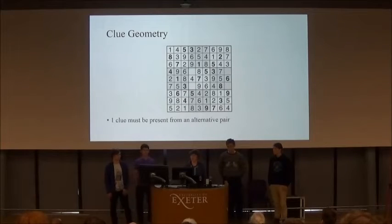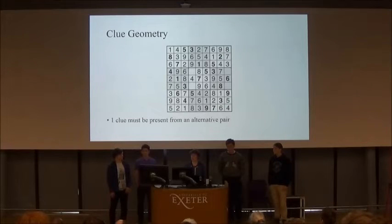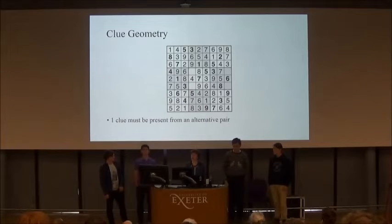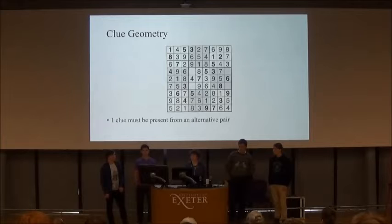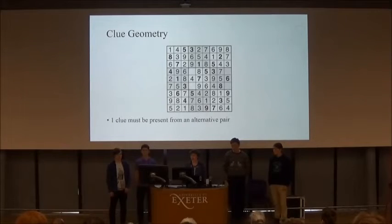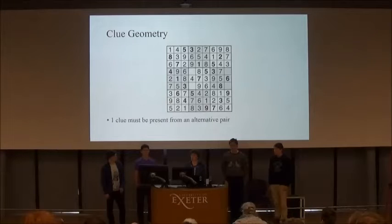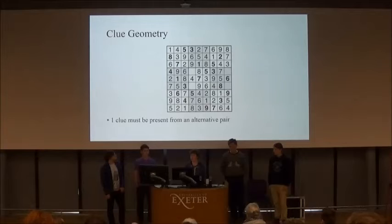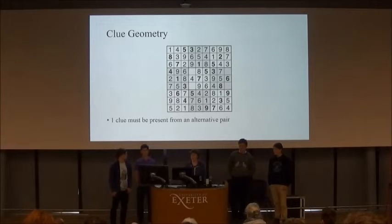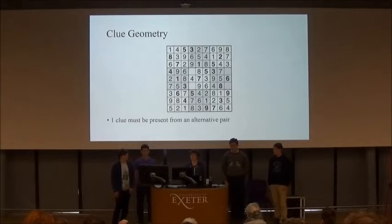With a completely empty Sudoku, if you filled in the clues completely randomly, to be 100% sure that there was only one solution you'd need 78 clues. By this I mean that if you have four blank squares, each arranged so that they share a row, a column, and a 3x3 square with one of the other blank squares, and each square is filled with one of two numbers, then there will be two solutions.